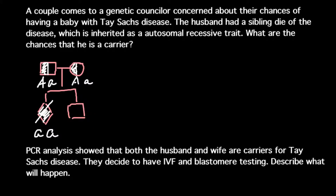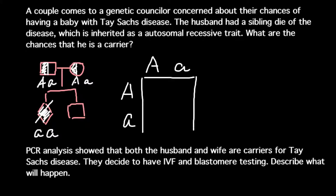We can now find the probability for this person to also be a carrier, or heterozygous like his parents. In order to find this probability we need to build a Punnett square. We know that both parents are heterozygous, so the heterozygous genotype goes on top and the heterozygous genotype of the second parent goes on the side.